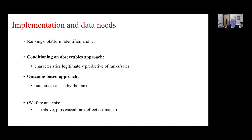For implementation: one needs rankings and platform identifiers for all approaches. For the conditioning on observables approach, one needs product characteristics. For the outcome-based approach, one also needs to observe outcomes like quantity sold. To do the welfare analysis, you need everything above plus an ability to get causal rank estimates, because in a counterfactual you want to change ranks and say something sensible about what would happen.